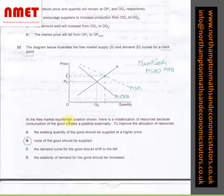So at the free market equilibrium position, as shown, there is a misallocation of resources because conception of the goods creates a positive externality. To improve the allocation of resources, as we can see from the diagram and part B, more of the goods should be supplied higher than QE.